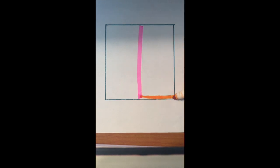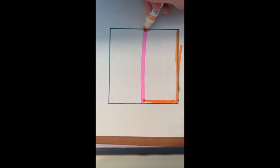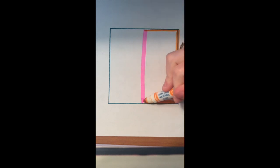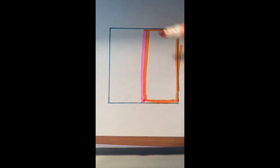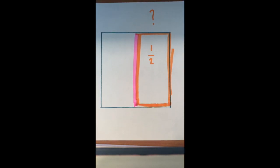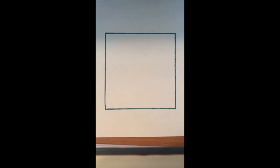So if we have one of those parts — you can see I'm doing orange here, I'm outlining that one part — how would we write that one part as a fraction? We would write it as one over two, or one half is how you would say that. We would do that because you have one part of the two pieces.